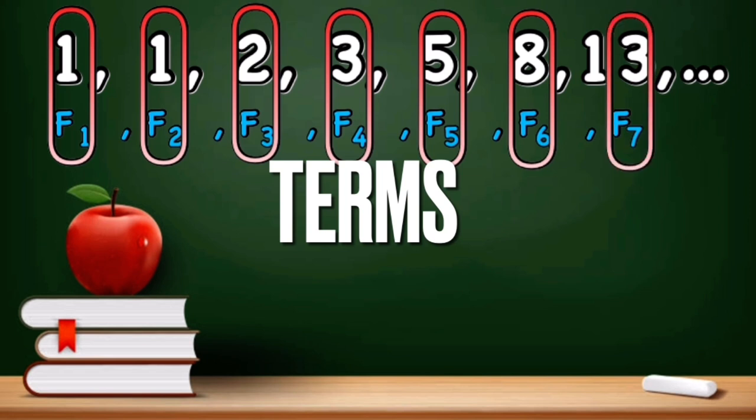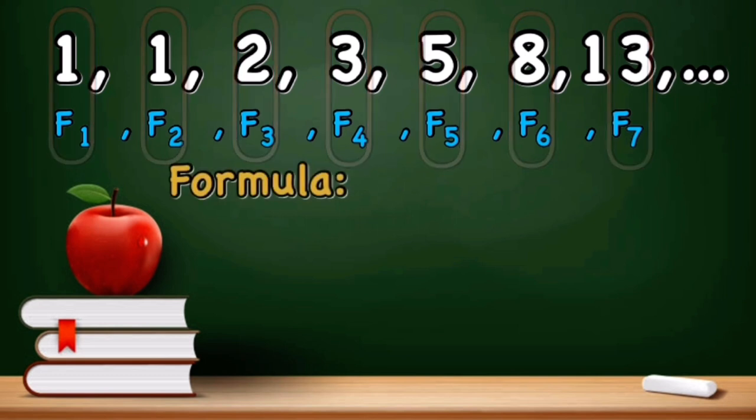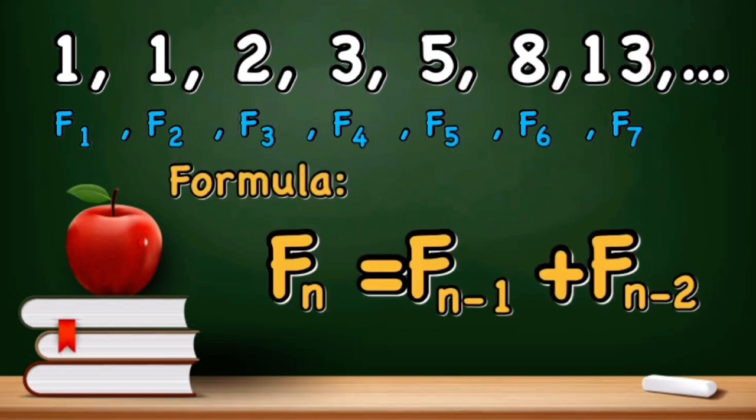Now what if we are going to look for the F of n, or the nth term in the Fibonacci sequence? We need to add F sub n minus 1 plus F of n minus 2, where F of n minus 1 is the previous term and F of n minus 2 is the previous previous term.